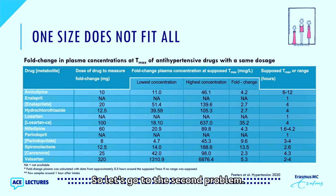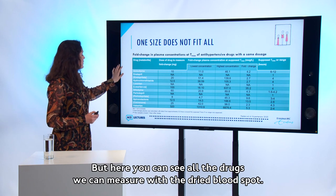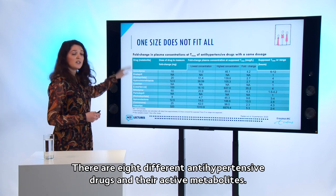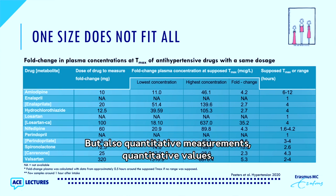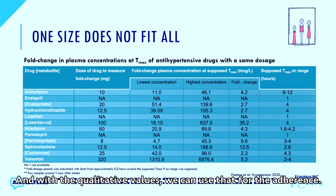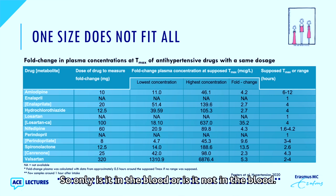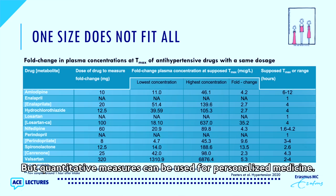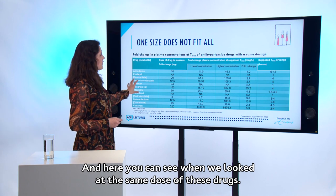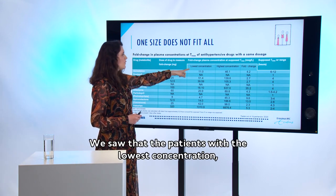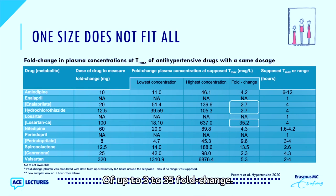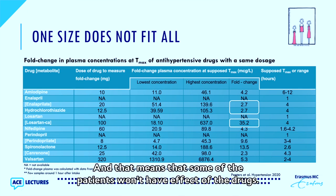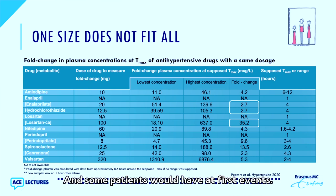The second problem is that one size does not fit all. With the dried blood spot we can measure eight different antihypertensive drugs and their active metabolites, both qualitatively and quantitatively. When we looked at the same dose across patients, we found that the lowest and highest concentrations had a fold difference of up to 3 to 35-fold — a really big difference. This means some patients won't have an effect while others will have adverse events, which is a really big problem.